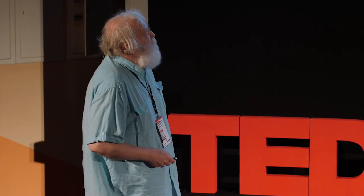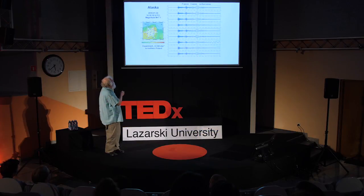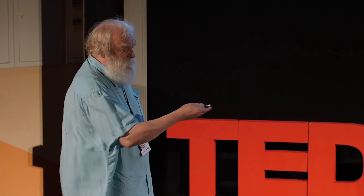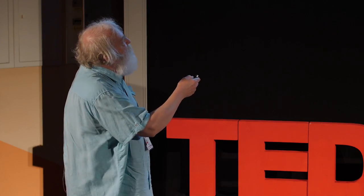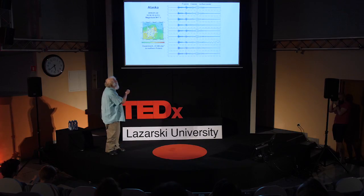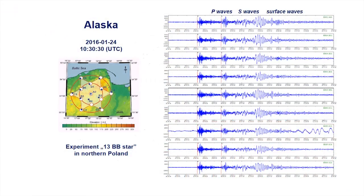How do we record these earthquakes? Strong earthquakes are recorded across the whole Earth. This is an example of our array in northern Poland, which recorded an Alaska earthquake. Basically, we record three kinds of waves: longitudinal P waves, S shear waves, and surface waves. Using seismograms, we can measure the travel time from the earthquake to the station. From the time of observation and amplitude of these waves, we can build a model of the Earth's interior.